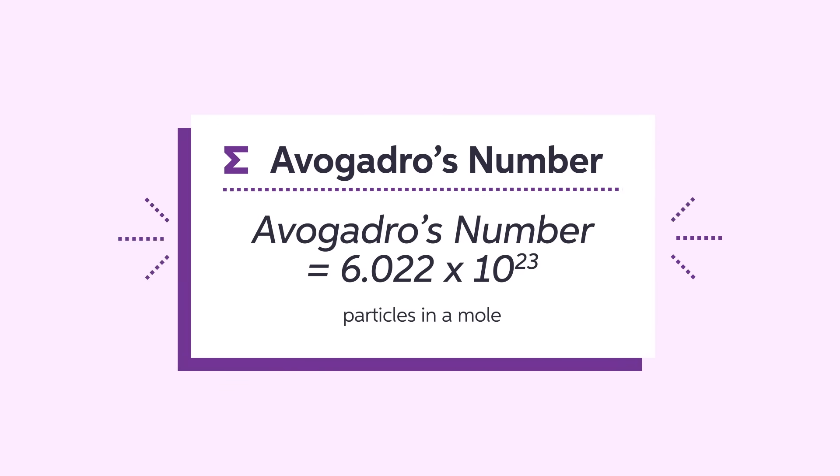A man named Amadeo Avogadro expressed that there were 6.022 times 10 to the 23rd particles in a mole. This number allows us to compare the same number of atoms or molecules regardless of their size and molar mass.